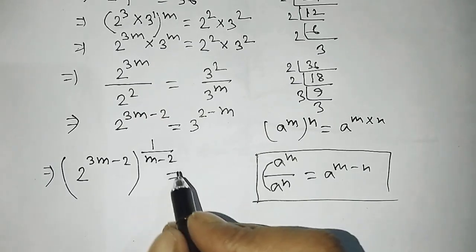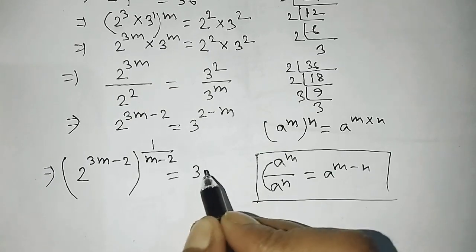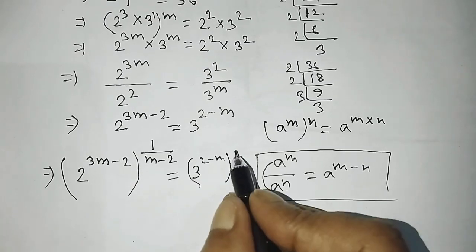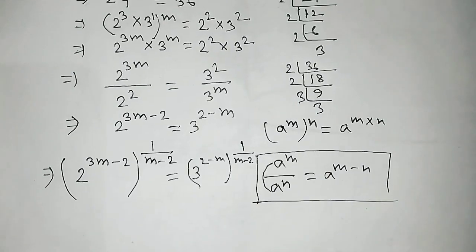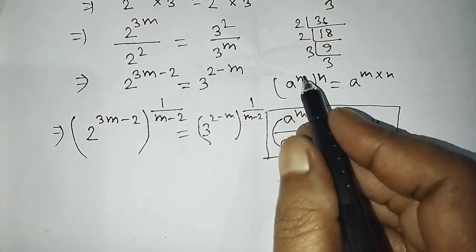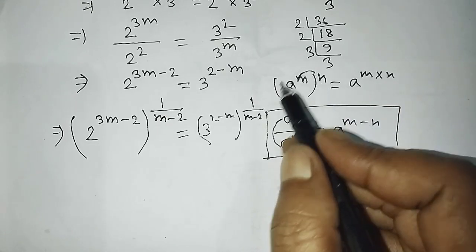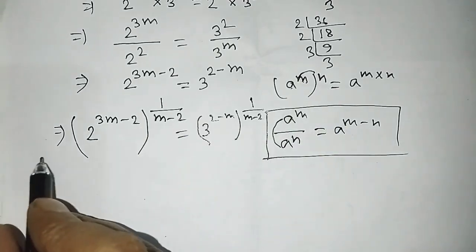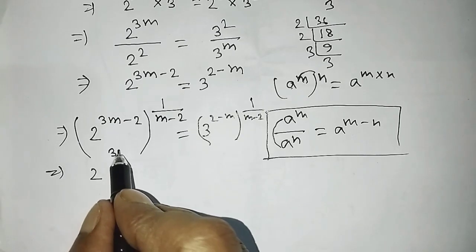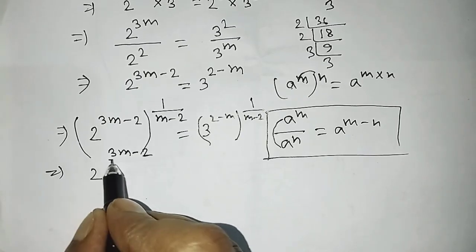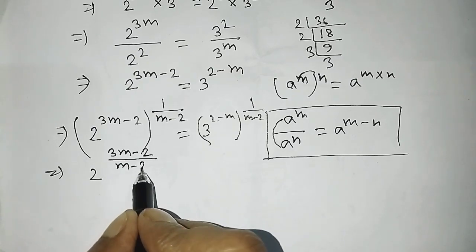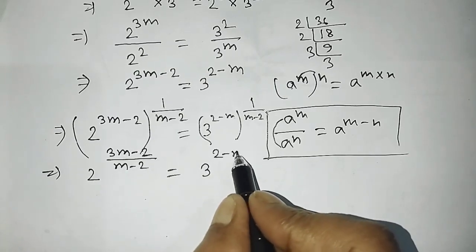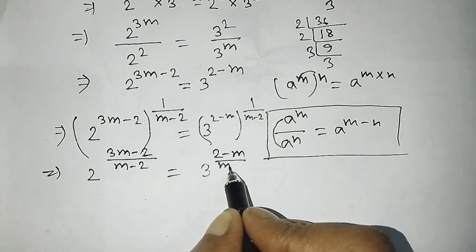Take the power 1 by m minus 2 on both sides. On the right side: 3 to the power 2 minus m, whole to the power 1 by m minus 2. Applying the same formula — multiply the two powers — gives 2 to the power (3m-2) divided by (m-2) on the left, equals 3 to the power (2 minus m) divided by (m minus 2) on the right.